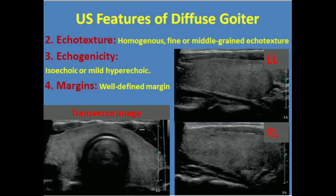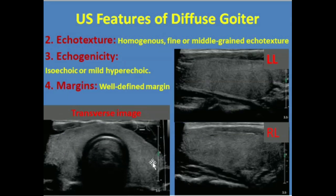Another feature of diffuse goiter is the echo texture. As we see in this image, it is homogeneous and very fine. Sometimes it may show a small grainy echo texture. The echogenicity is isoechoic or mildly hyperechoic.